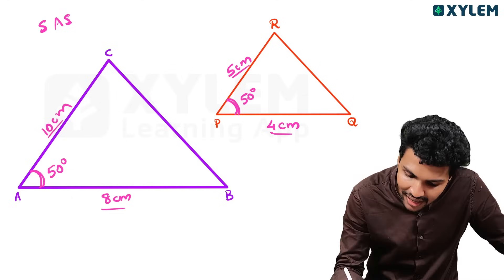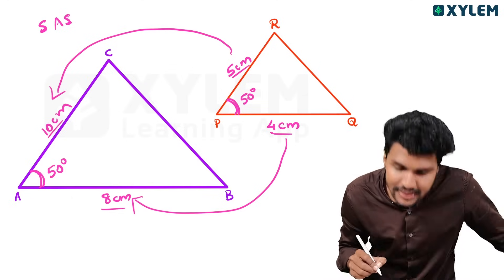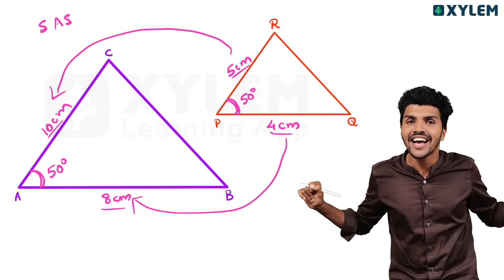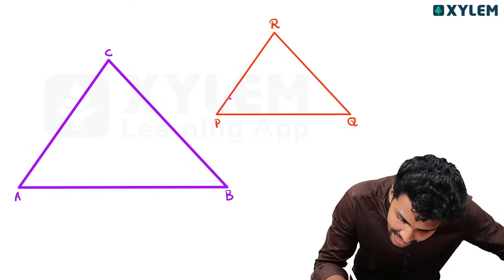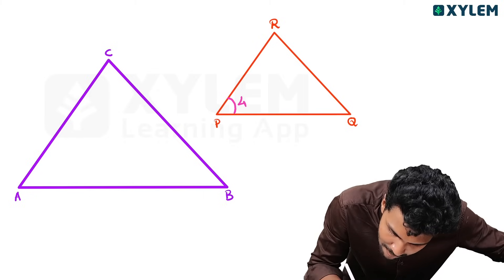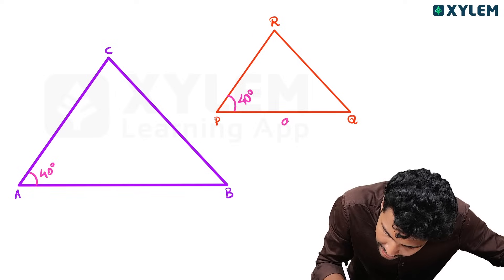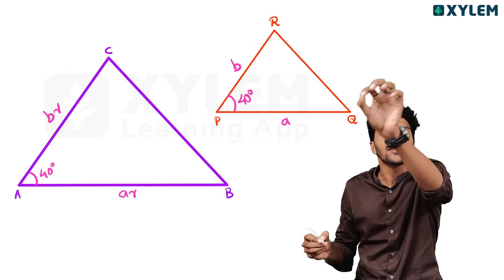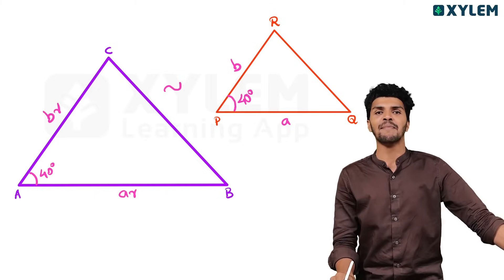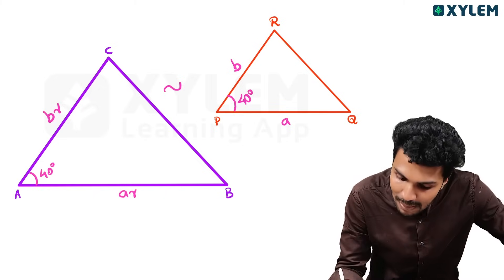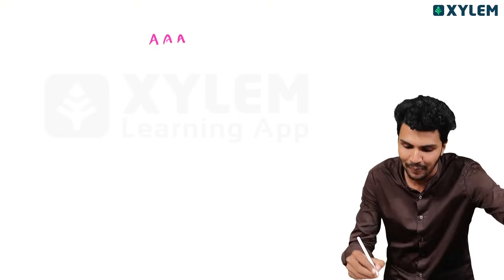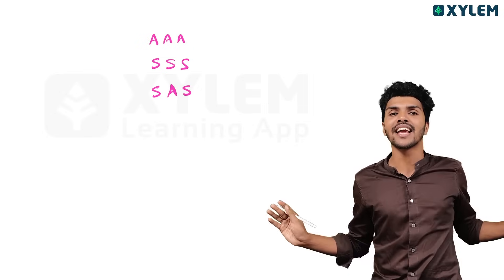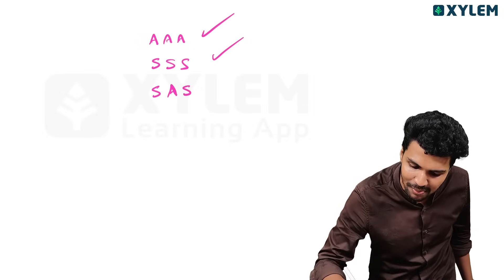The triangle is similar. Here, the ratio of 5 and 4 is the same. Do we have the same ratio? Yes — the same ratio and the same included angle. We look at this angle: it is 40 degrees. This angle is A and the scaling factor AR gives the same result. The triangle is similar.